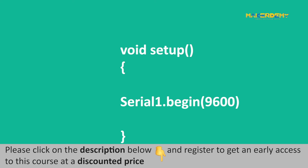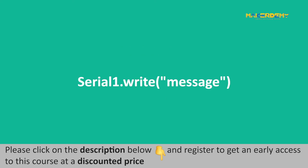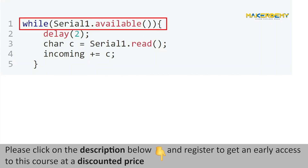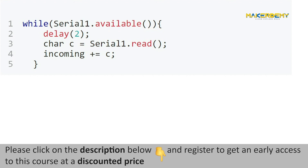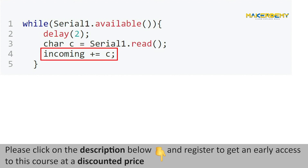To send data serially via UART, we need to give the command Serial1.write(message). We can use a while loop to read each character coming via UART and then add the characters to form a complete string. Use a while loop with condition Serial1.available(). Inside the loop, read each character by using the command Serial1.read(), then add each character to form a string.